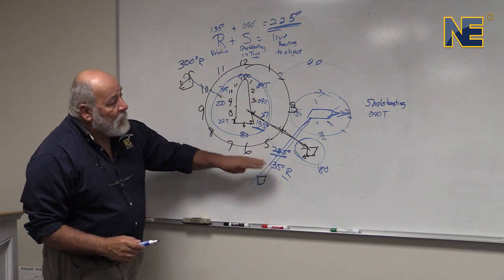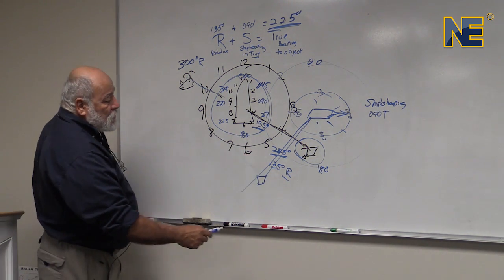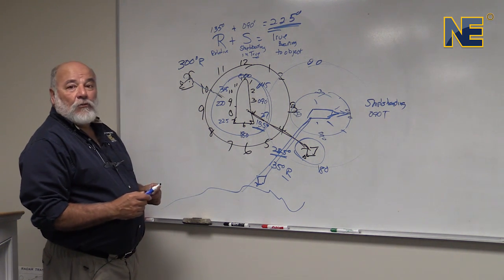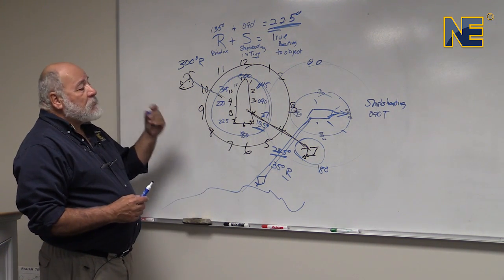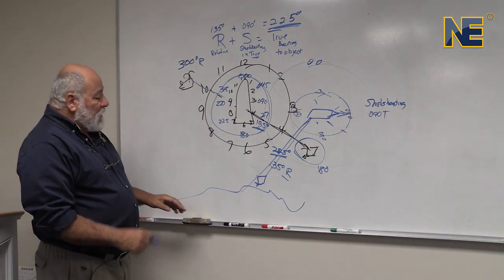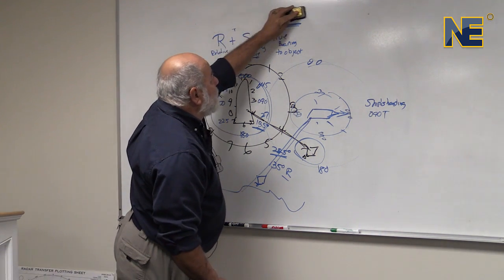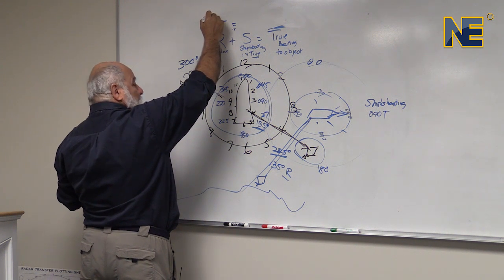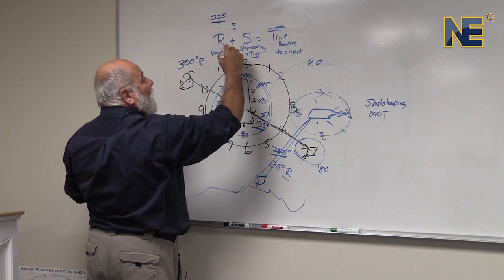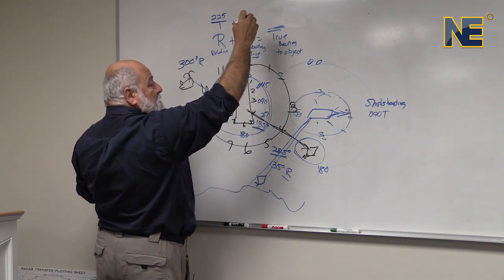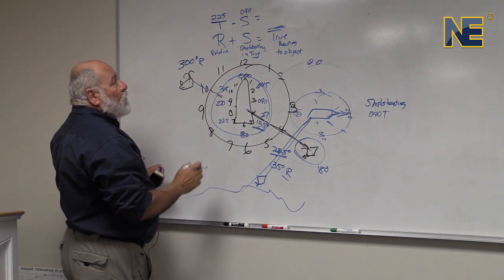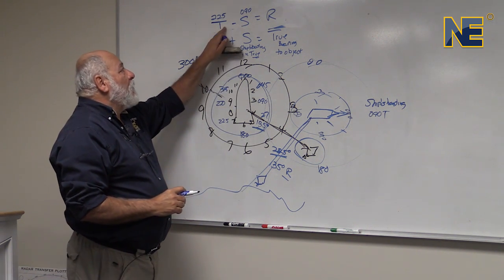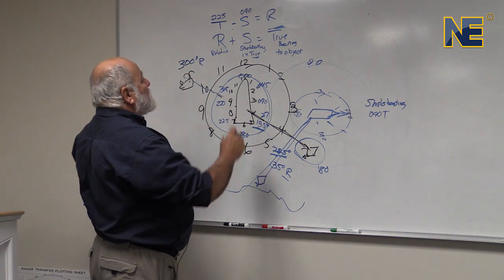So the buoy is 135 degrees relative but 225 degrees true. If we were looking on the chart, we would go 225 degrees on the compass rose to find that buoy, lighthouse, steeple, or whatever we're looking for. We can also work in the other direction: if we know the true bearing to the light is 225 degrees and our ship's heading is 090 degrees, we can figure out the relative bearing by flipping the formula — T minus S equals R.